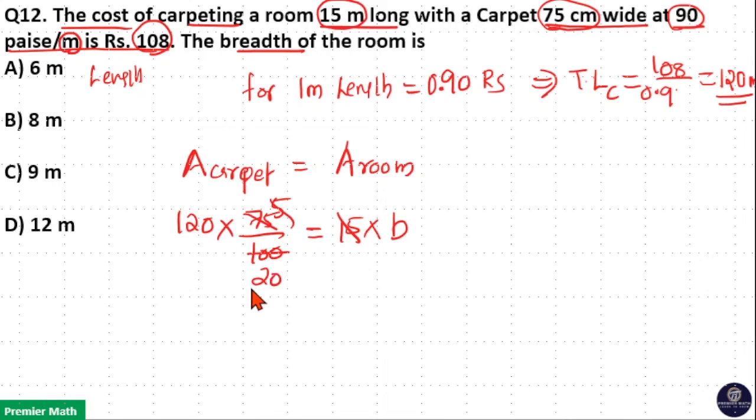20 goes 6 times in 120, so breadth of the room is 6 meters. So the breadth is 6 meters, so option A is your answer.